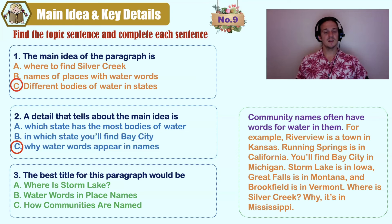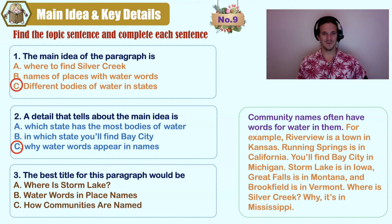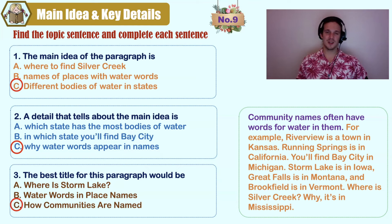The best title: A) where is Storm Lake, B) water words and place names, C) how communities are named. I chose C — how communities are named — because one reason communities are named that way is because of the body of water.